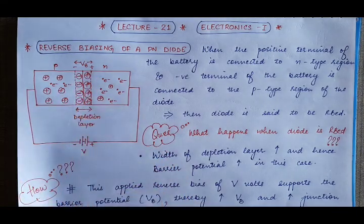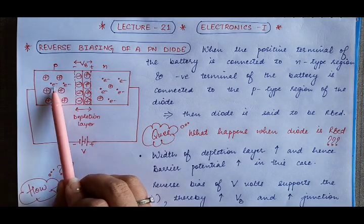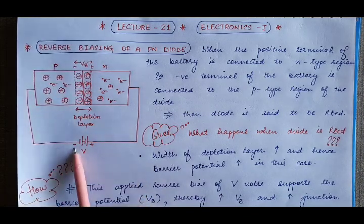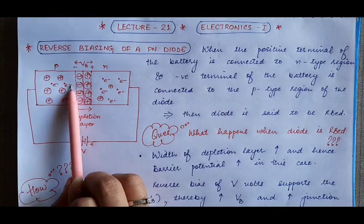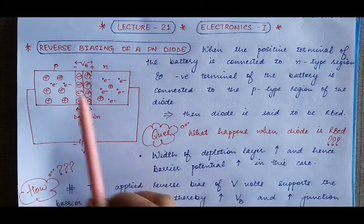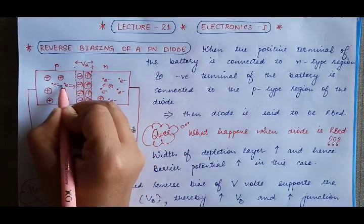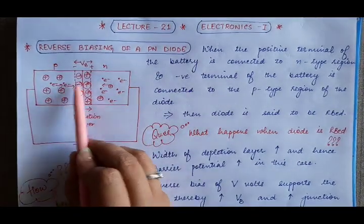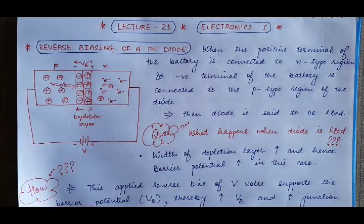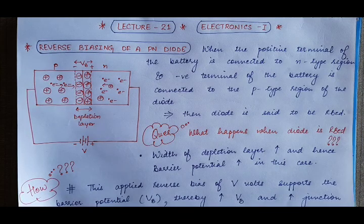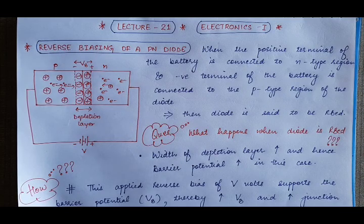Near the junction, what remains are the minority carriers. In the P-type region, electrons are the minority carriers. These carry negative charge, and the negative terminal repels them toward the junction. Similarly, minority carrier holes in the N-region are repelled toward the junction. These minority carriers cross the junction. So in reverse biasing, the small amount of current that flows does so because of the diffusion of minority carriers across the junction. Since the number of minority carriers is small, this current is also very small.